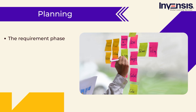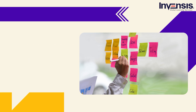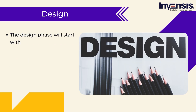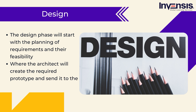The requirement phase, also known as the planning phase, allows the development team to get the requirements from the client. Once the requirements are documented, the process moves further to the design phase. The design phase starts with the planning of requirements and their feasibility, where the architect creates the required prototype and sends it to the client. This phase includes the user interface design with its core functionalities. After that, the client's approved designs are forwarded to the development team.